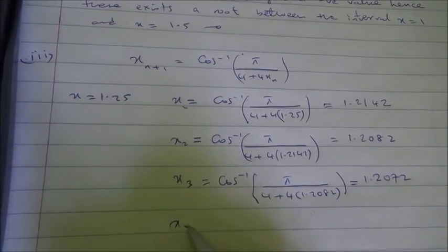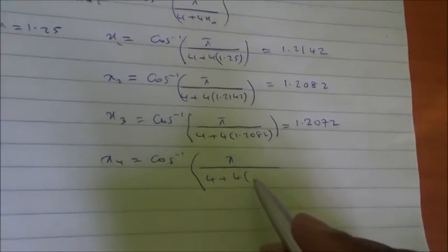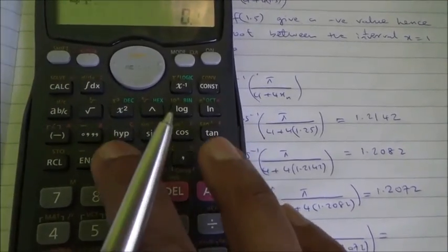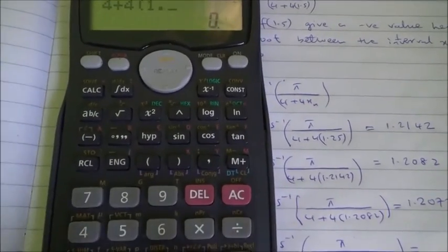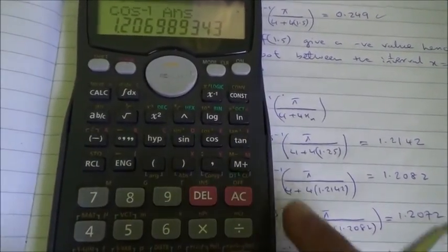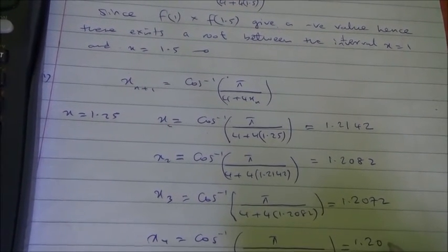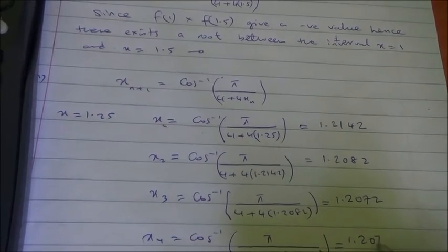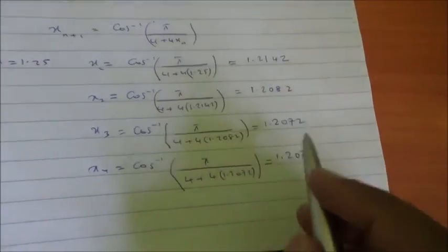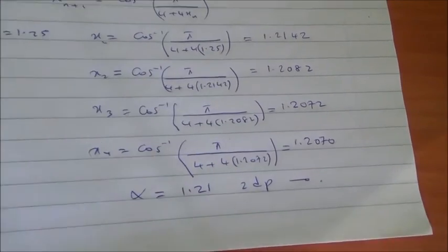Continuing the iterations with 4 + 4×1.2072, we can see that the values are all converging — 1.21, 1.21, 1.21. So the root is going to be 1.21 to two decimal places. And here we are for this question.